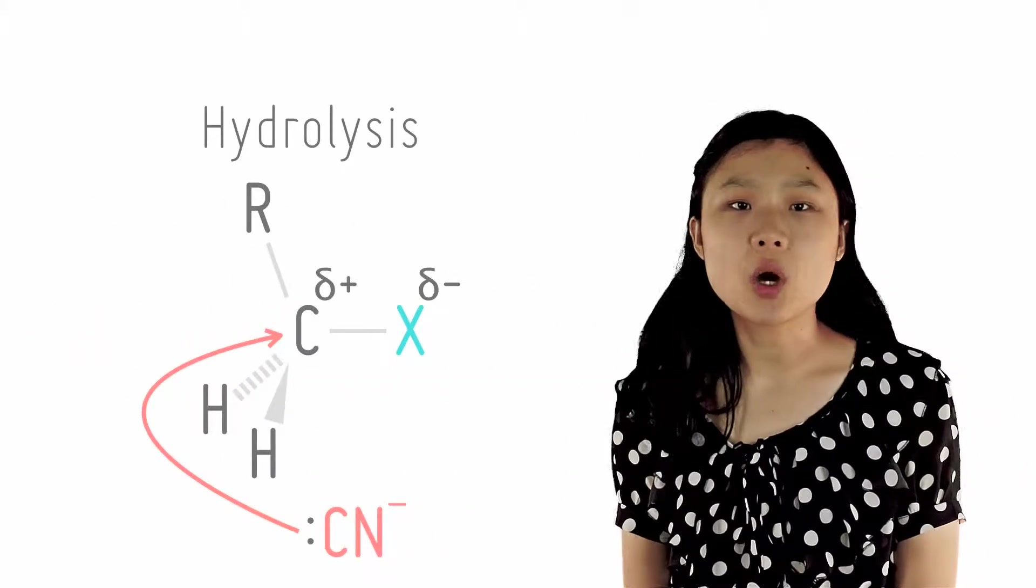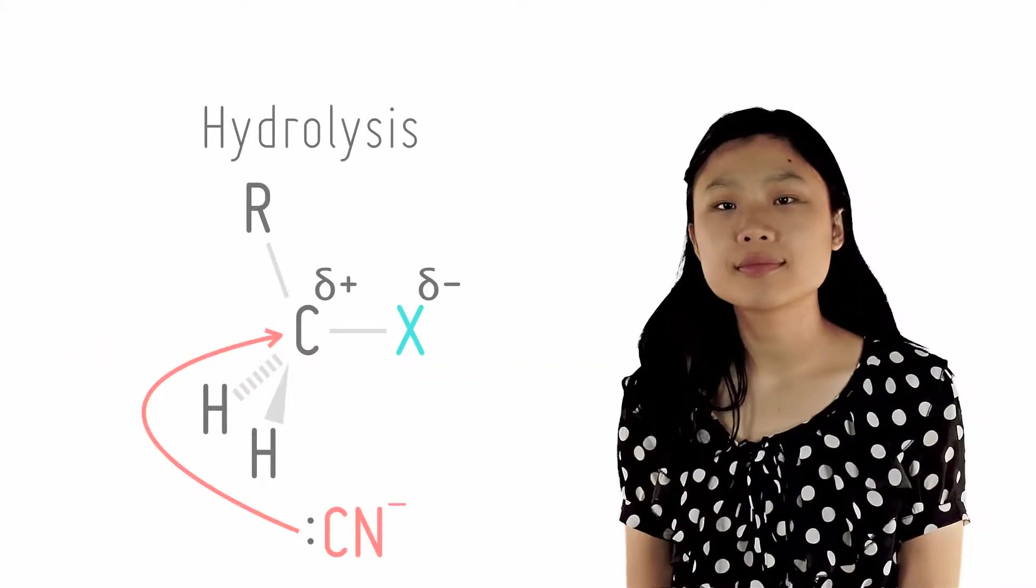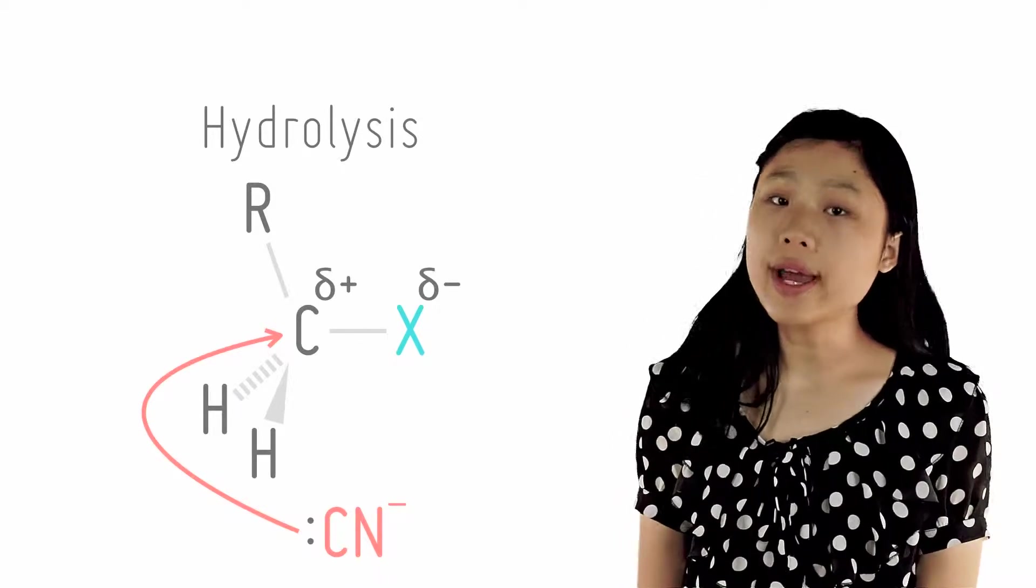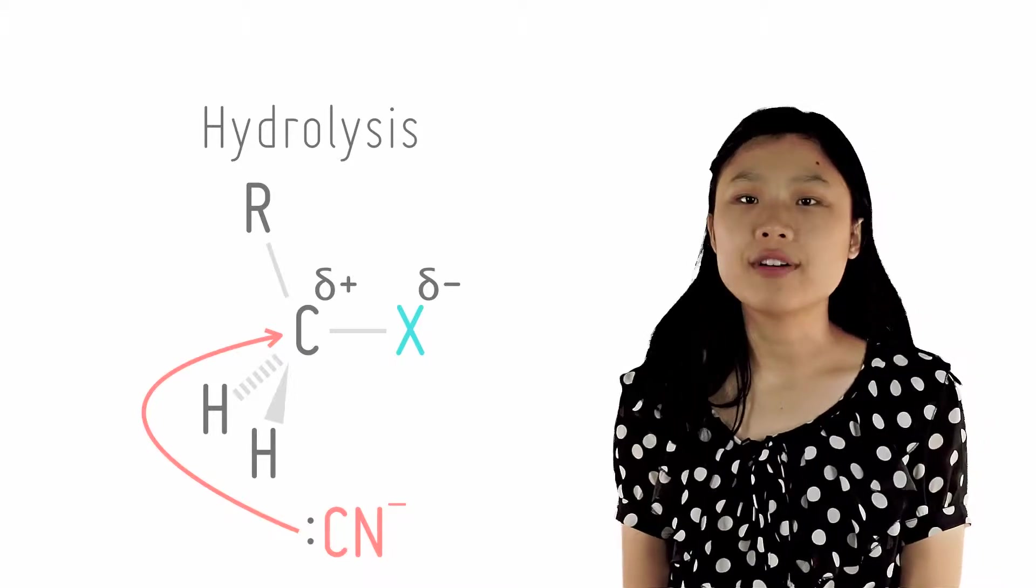We can also form nitriles, which are organic compounds with the CN group. By heating the halogenoalkanes with cyanide in a mixture of alcohol and water, the CN acts as a nucleophile.